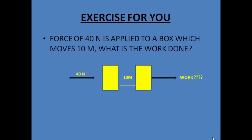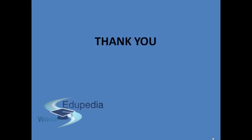Now the next exercise for you: a person applies 40 Newtons of force onto an object and moves it 10 meters. What is the work done by the person? If your answer is 400 Newton meters, then you have understood the concept. Thank you for watching the video.